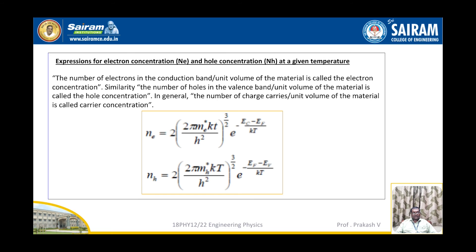Expression for electron concentration Ne and hole concentration Nh at a given temperature. The number of electrons in the conduction band per unit volume of the material is called electron concentration. Similarly, the number of holes in the valence band per unit volume of the material is called hole concentration. In general, the number of charge carriers per unit volume is given by Ne equal to 2 times (2π m_e* kT / h²)^(3/2) times e^(-(E_c - E_F)/kT).